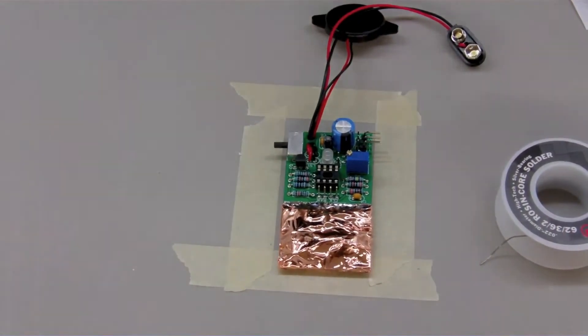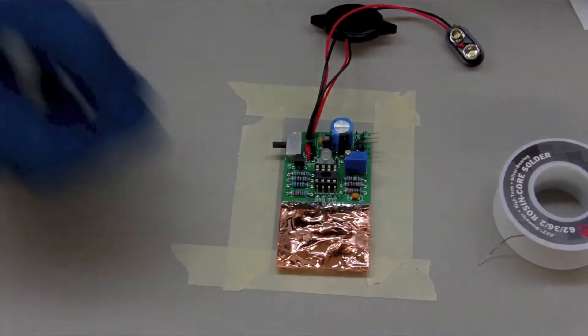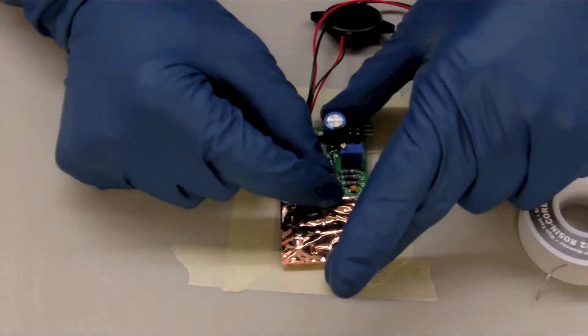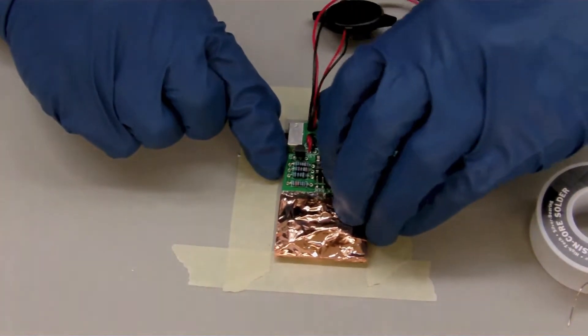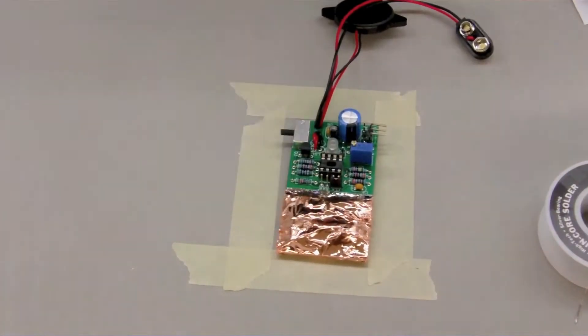All right, howdy folks. We've got our copper coating on. So now we're going to put our jumpers on. We're going to put the jumper over click, so that way it makes an audible click and flashes the LED.